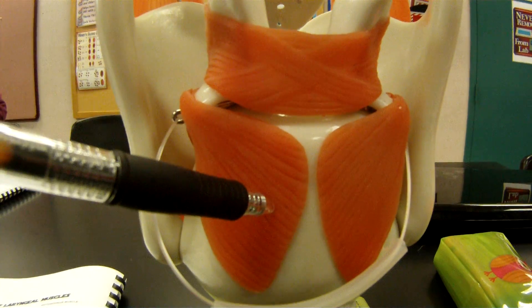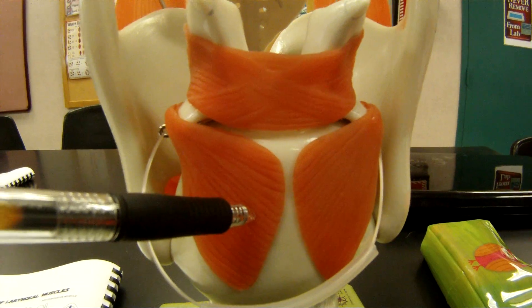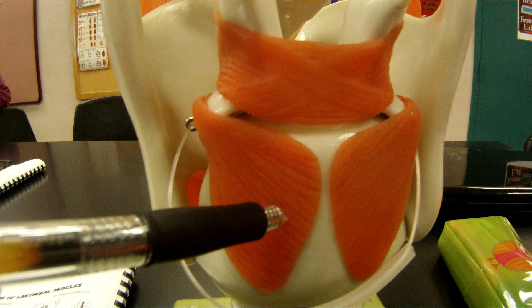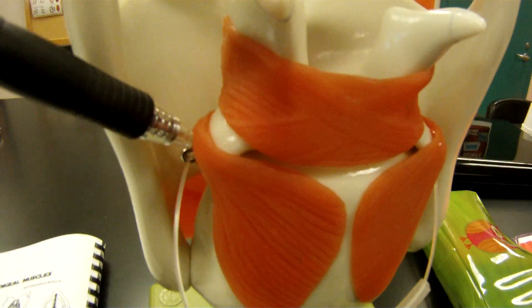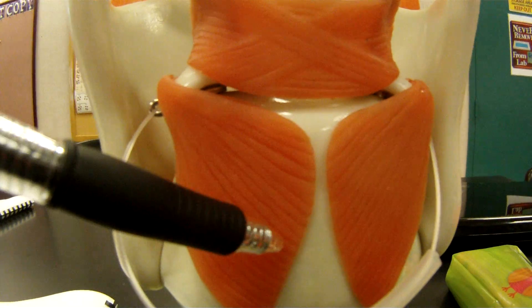And this is where it becomes the posterior cricoaretinoideus muscle. So just remember your landmarks, from cricoid cartilage to aretinoid cartilage, back to the posterior side.